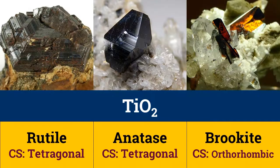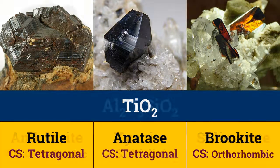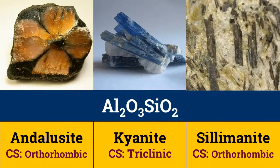Examples of trimorphs include TiO2, which may exist as rutile, anatase, or brookite. Three different structural arrangements of Al2SiO5 are andalusite, kyanite, and sillimanite. All these minerals can be found in metamorphic rocks of all geological ages.